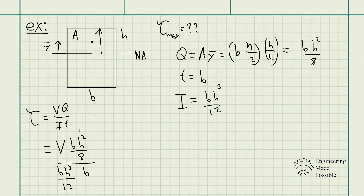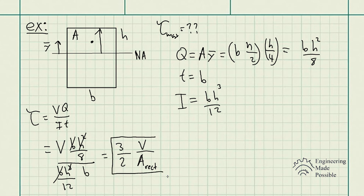Plugging into the transverse shear formula τ = VQ/(It), we can simplify by canceling the base B from numerator and denominator, and H² from H³, leaving just H. This gives us τ_max equal to 3/2 times the shear force divided by the cross-sectional area of the rectangle. This is the maximum shear stress developed for a rectangular cross-section. The only confusing part is solving for Q, but once you get enough practice you understand what to look for. This is how you solve for the transverse shear stress, which is also equivalent to the longitudinal shear stress.